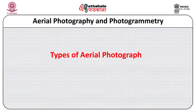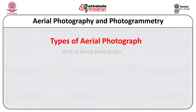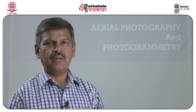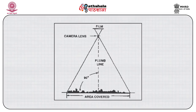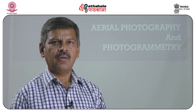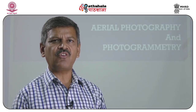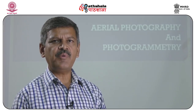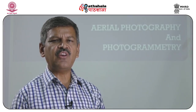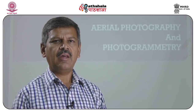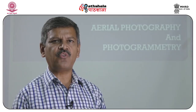Aerial photographs are of two types: vertical air photographs and oblique aerial photographs. In vertical air photographs, the camera is on top of the object making a 90-degree angle with the earth surface. This type of aerial photography provides a photograph with minimum distortion. Geometrical correction is very few in this type of photograph, and for geometry measurement, this type of photograph is taken.